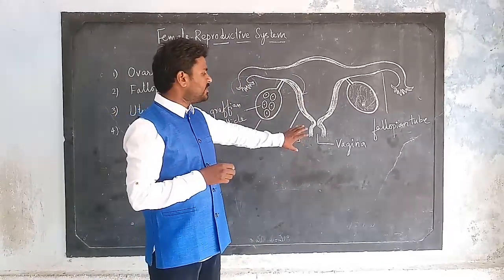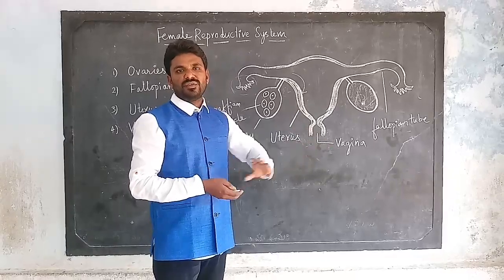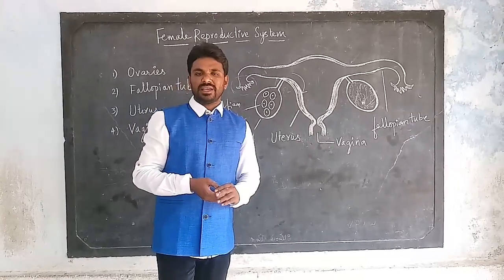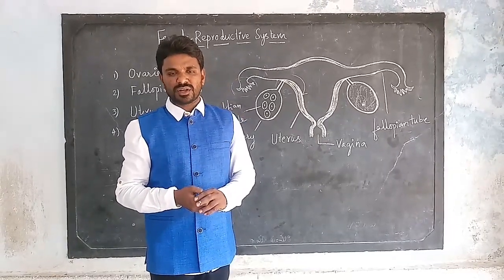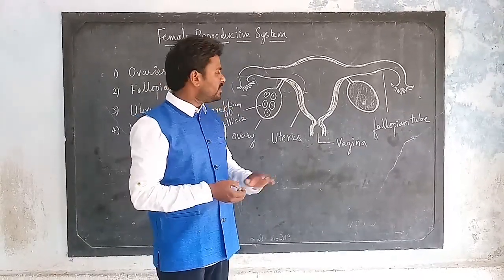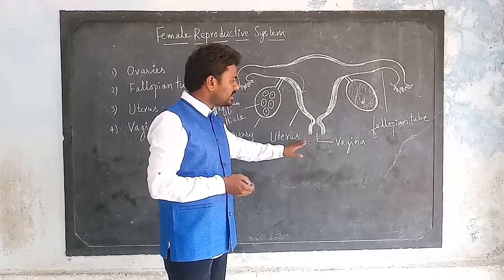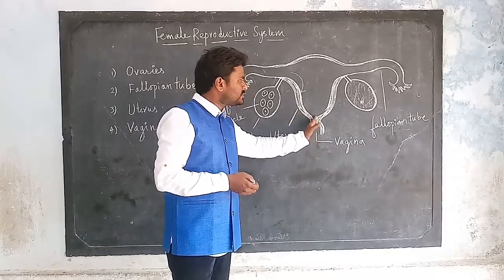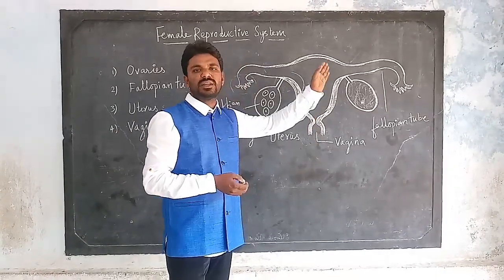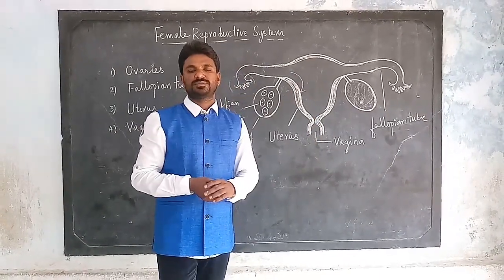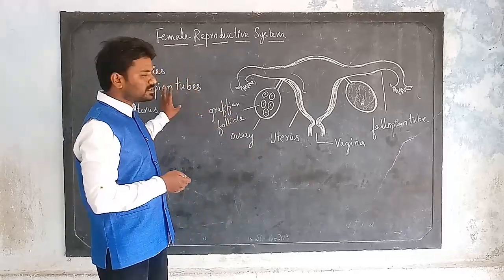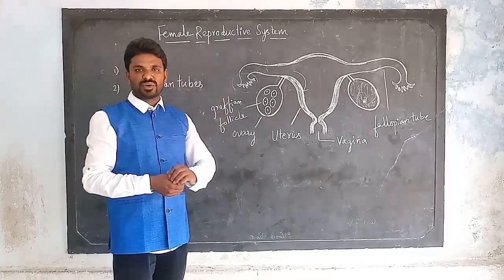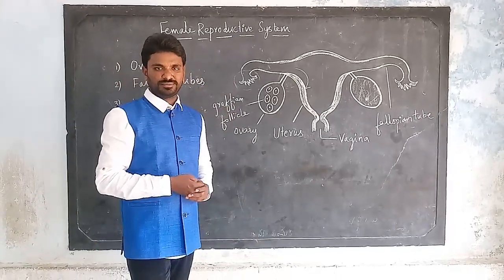Next, the vagina. The vagina is a part of the female reproductive system that helps in the transportation of sperm cells into the female reproductive system. These are the parts of the female reproductive system.